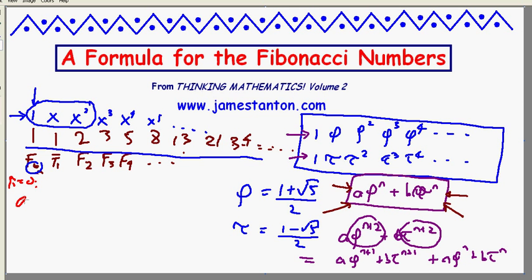I want a times phi to the 0, just a times 1, plus b times tau to the 0, which is just b, to equal the first Fibonacci number 1. So I want a plus b to equal 1. Now look at n equals 1.